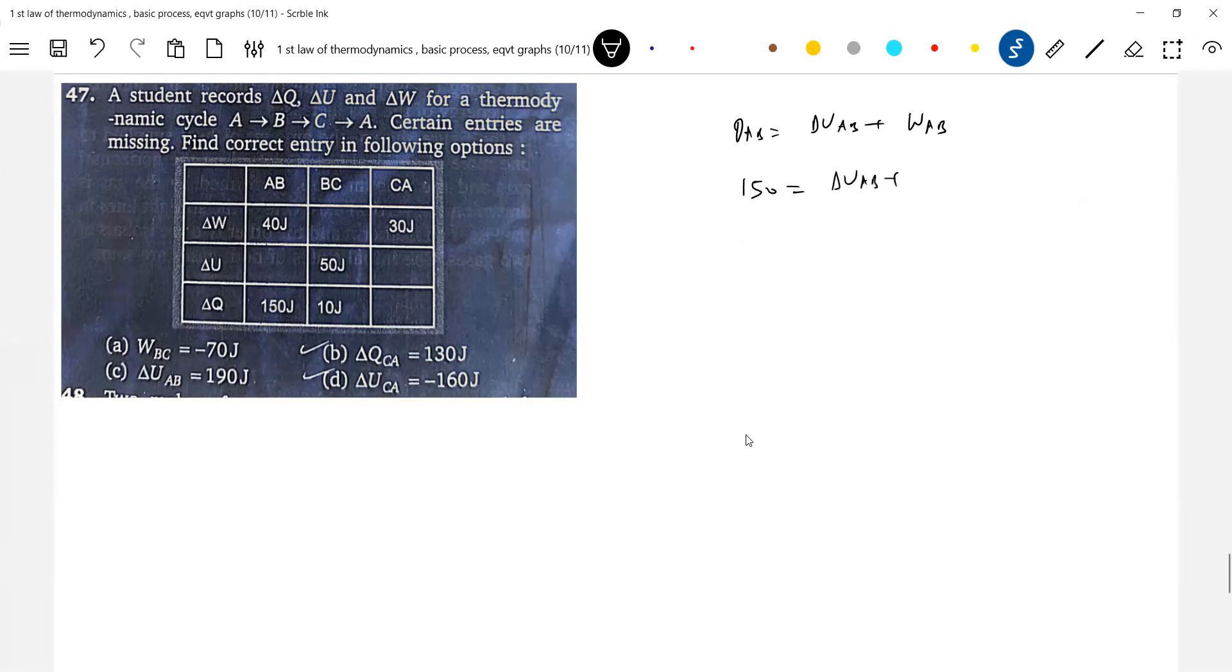So what is W_AB? 40. So what is ΔU_AB? It should be equal to 110 joules. Okay, once you know ΔU_AB, so let's go for ΔU_AB.